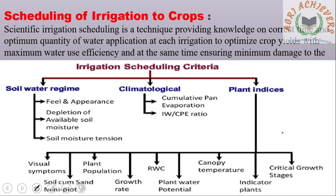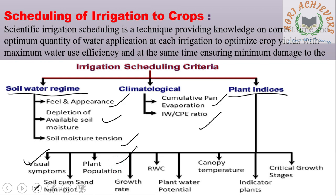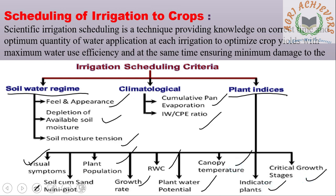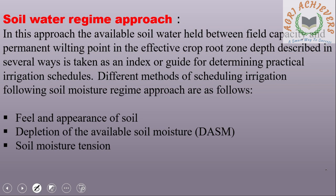Scheduling of Irrigation to Crops: Scientific irrigation scheduling is a technique providing knowledge on the correct time and optimum quantity of water application to optimize crop yields with maximum water use efficiency, while ensuring minimum damage to the crops. Irrigation scheduling criteria include: soil water regime, feel and appearance method, depletion of available soil moisture, soil moisture tension, climatology, cumulative pan evaporation, IW/CPE ratio, and plant indices. Plant indices include visual symptoms, soil come-sand, mini plot, plant population, growth rate, RWC, plant water potential, canopy temperature, indicator plants, and critical growth stages.